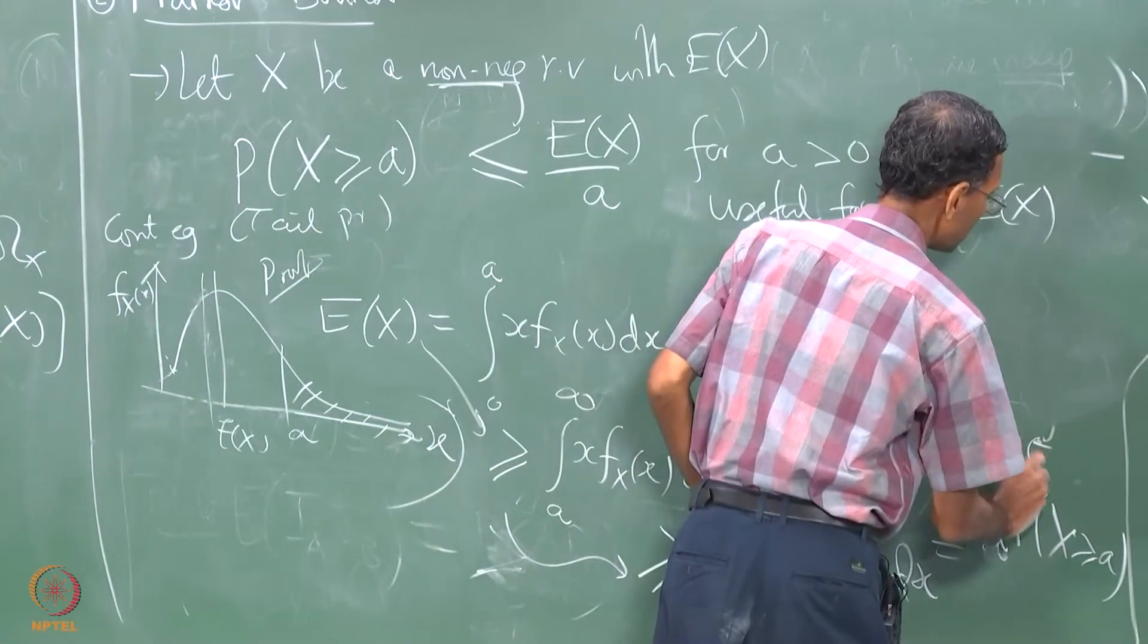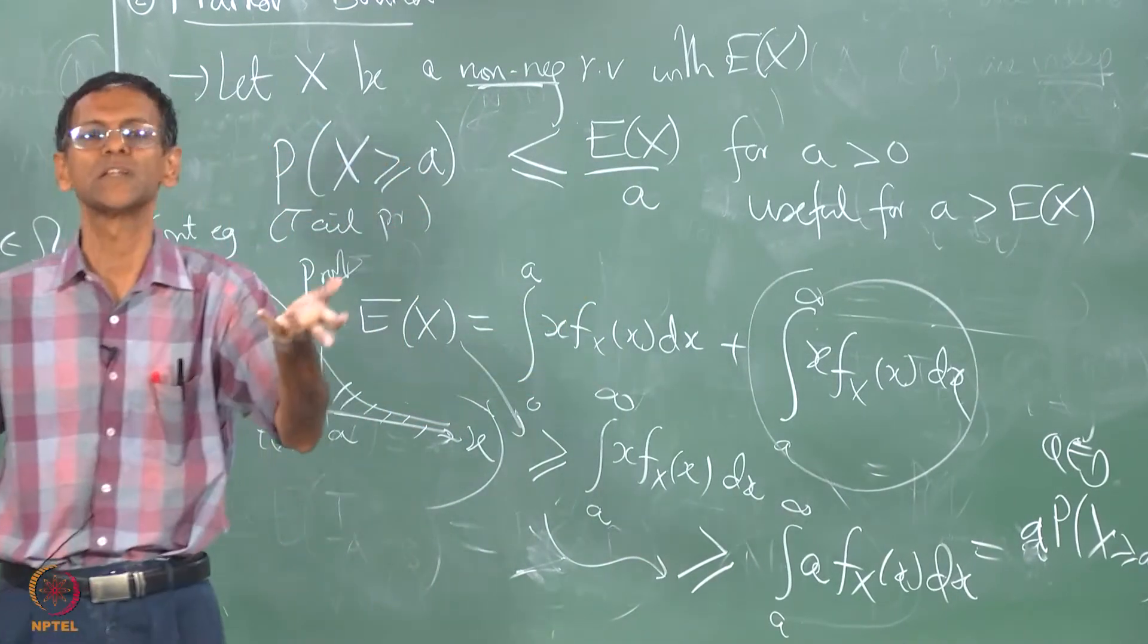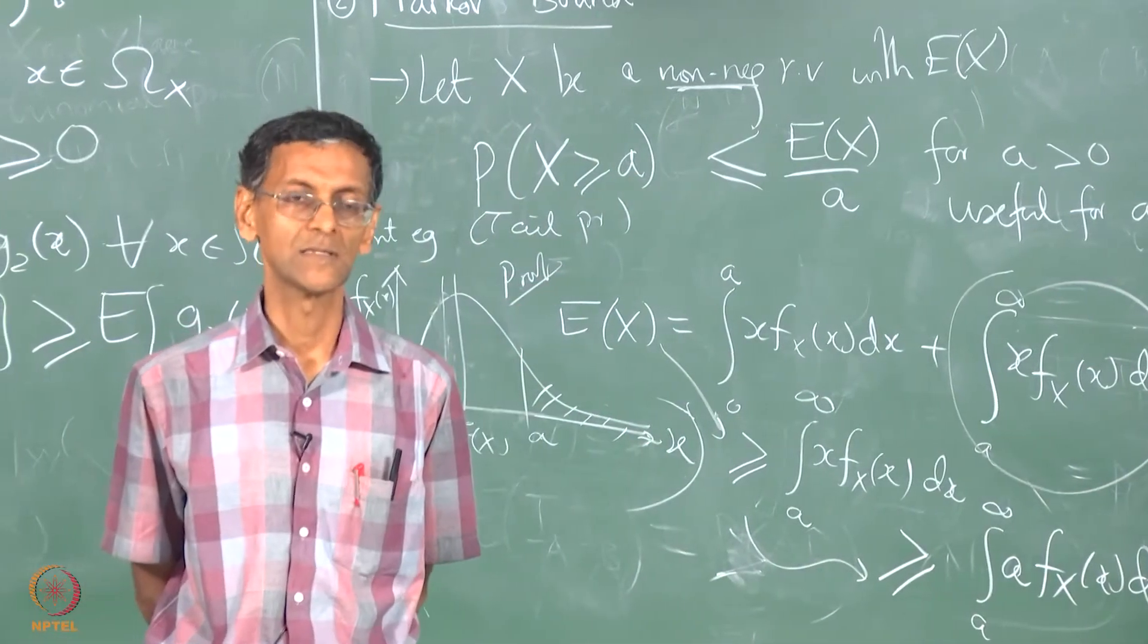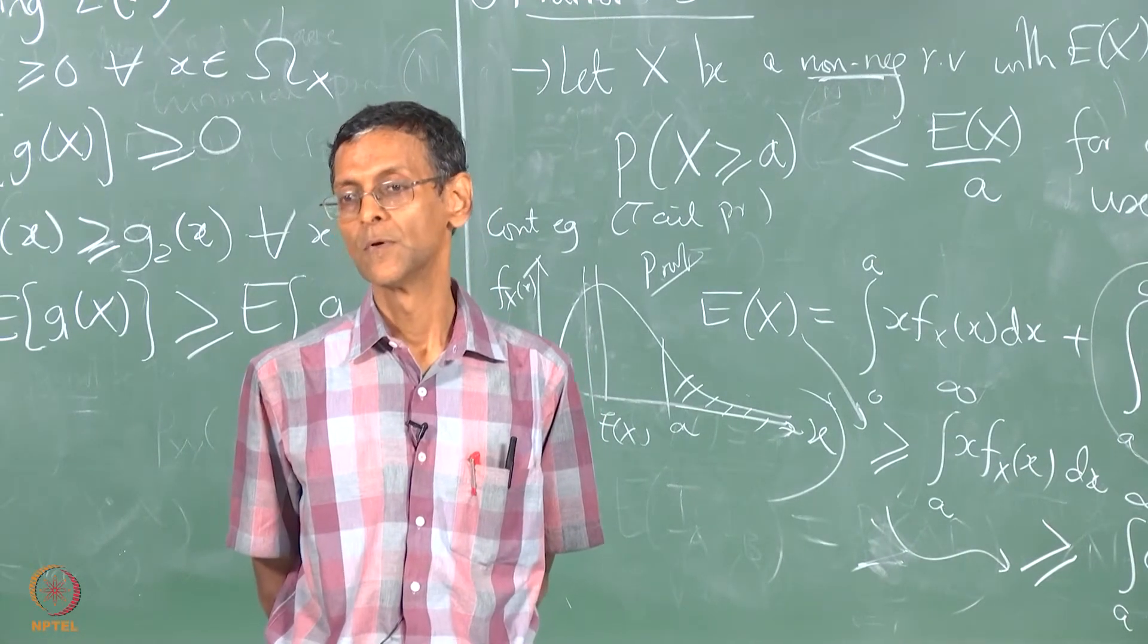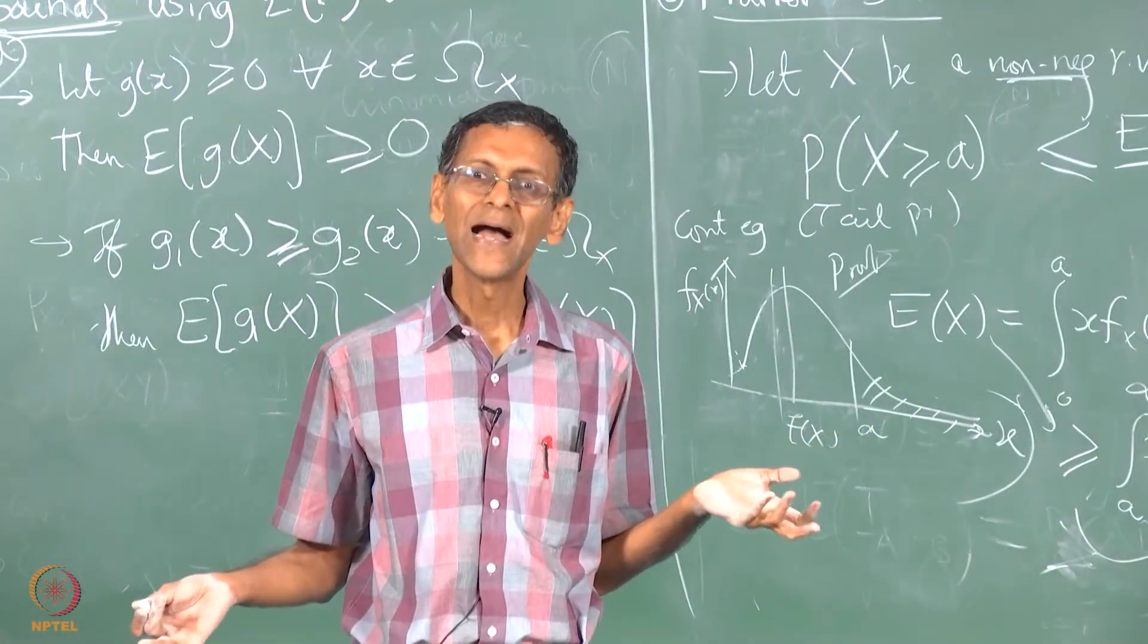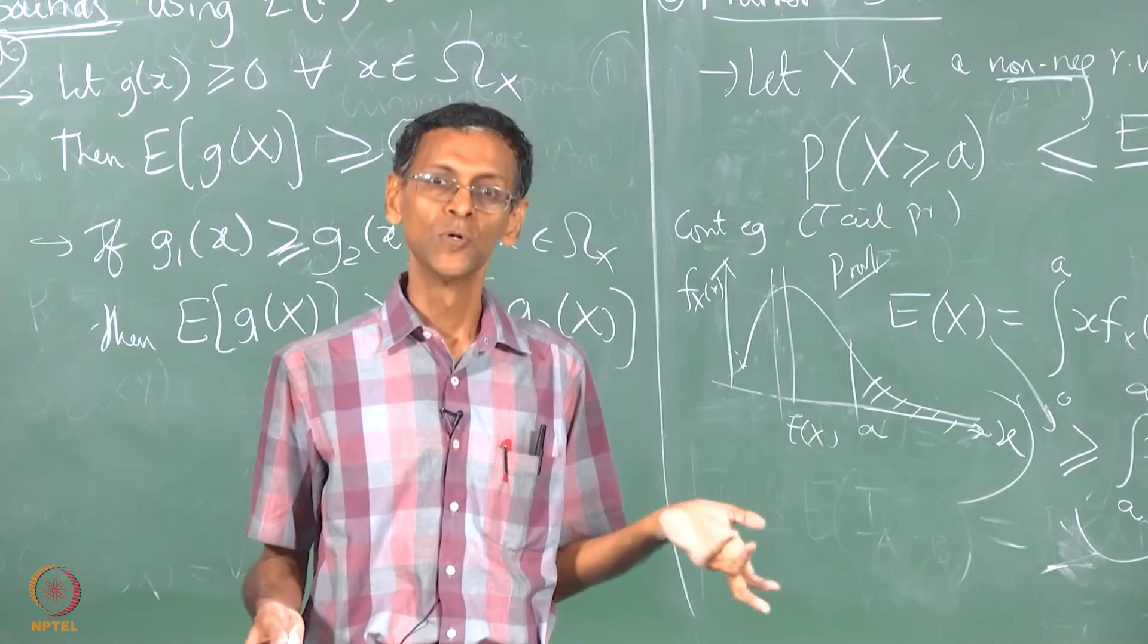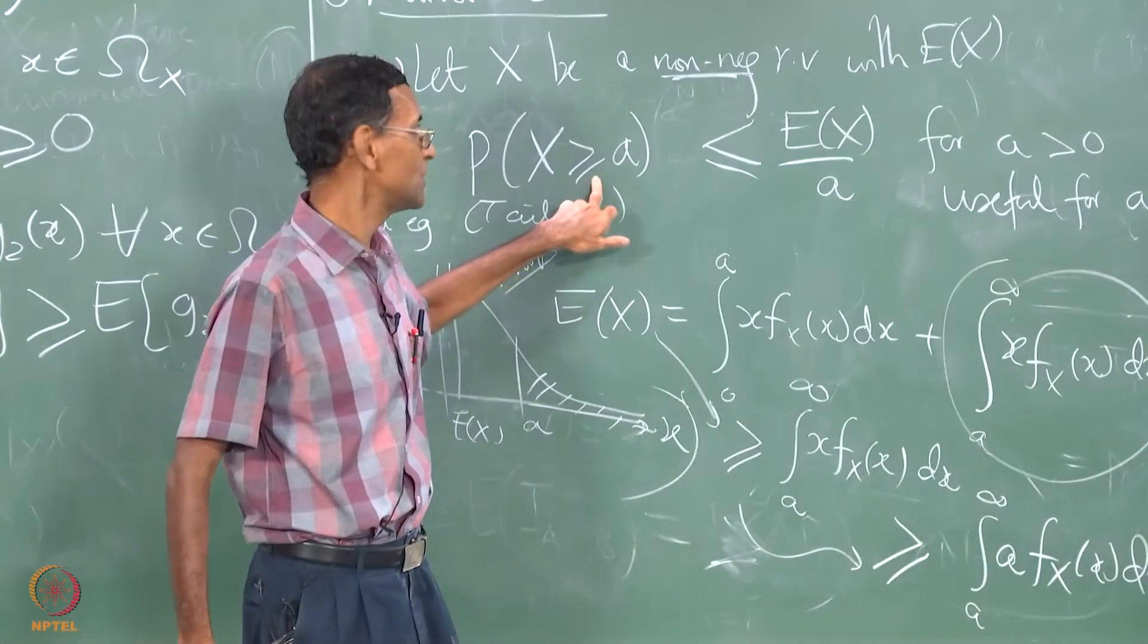Last thing today, how do you get equality here? You get equality if and only if x itself is a constant equal to e of x and you choose a to be that constant. Then in that case this will be 1, this will also be 1. So with that we will end today's lecture. All of these cases right, equality is, you have to look for equality also. So equality is achievable in the degenerate case when x is just a constant. And you choose a to be exactly that constant. So that is a discrete, it is a degenerate discrete case right, x always takes that one value and you take a to be that value. So that this is 1, that is why this equals is important. If you leave out this equals then this will become 0.